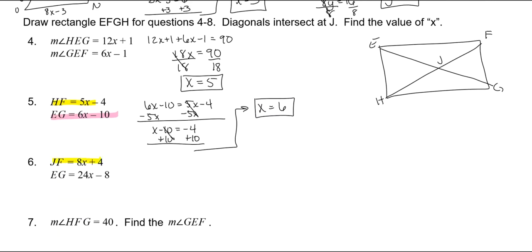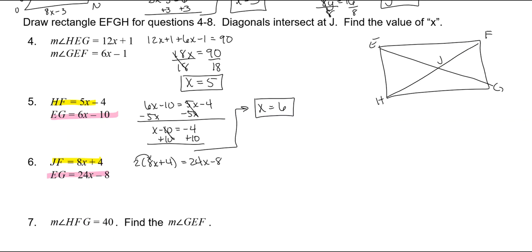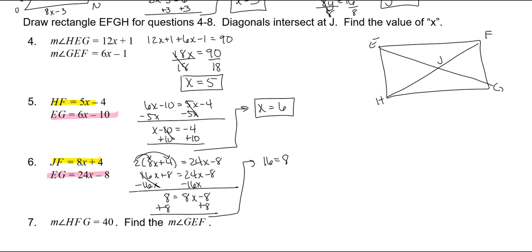JF is part of the diagonal, and EG is the whole diagonal, so we have to double JF to equal EG. So 2 times (8X plus 4) is equal to 24X minus 8. Distribute the 2: 16X plus 8 is equal to 24X minus 8. Subtract 16X on both sides: 8 is equal to 8X minus 8. Add 8 to both sides: 16 is equal to 8X. Divide by 8, and X is 2.